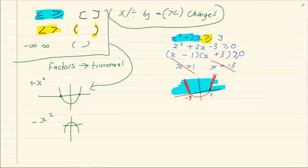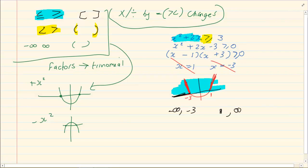Now, how do we write it? Write exactly as you are seeing it. You see, negative infinity is first and then negative 3. And then we have 1 and infinity.